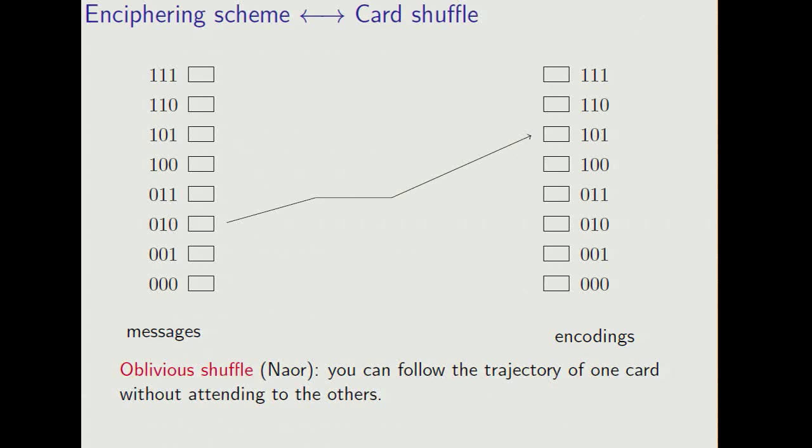If a card shuffle is going to make a good enciphering scheme, then it needs to be what Maurer now called oblivious, which means that you can trace the trajectory of a single card without worrying about what's happening with the other cards.